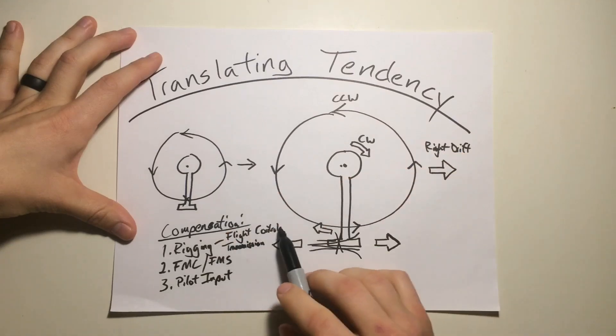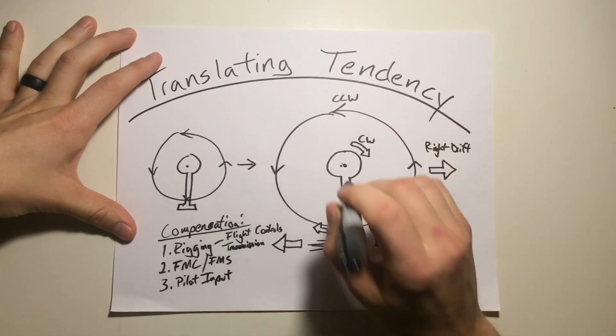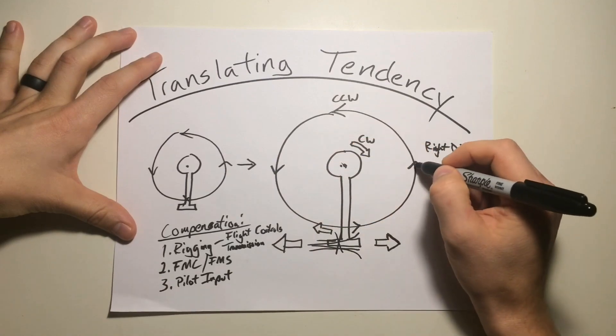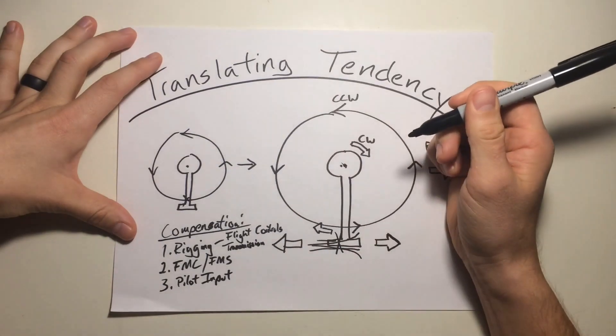And that counteracts, just like in your flight controls or your FMC, that counteracts that right drift by increasing the pitch over the tail, which manifests 90 degrees later, and stops that drift to the right.